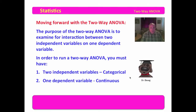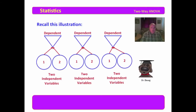Categorical means that we have things broken out in nominal groupings, and continuous means that we either have interval or ratio data for the dependent variable.